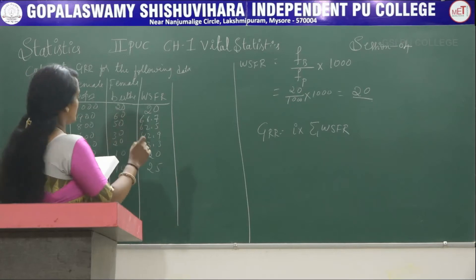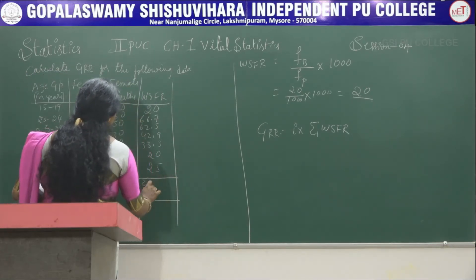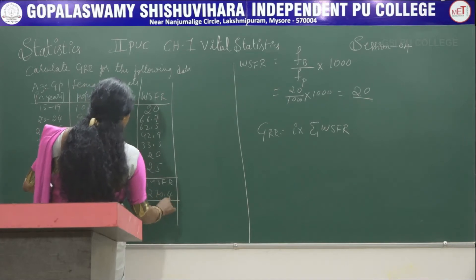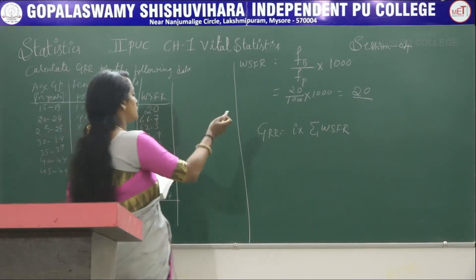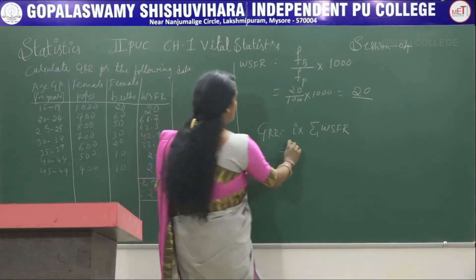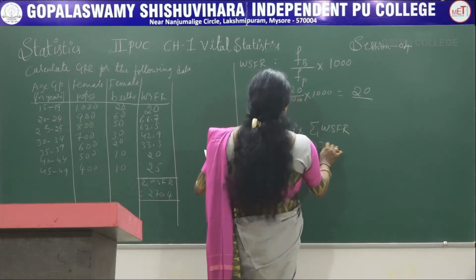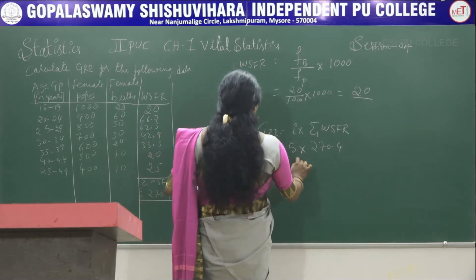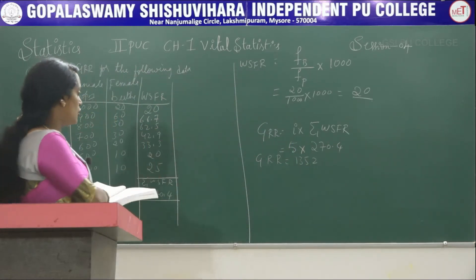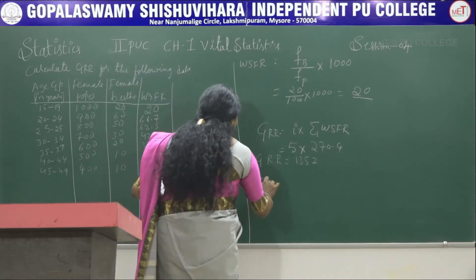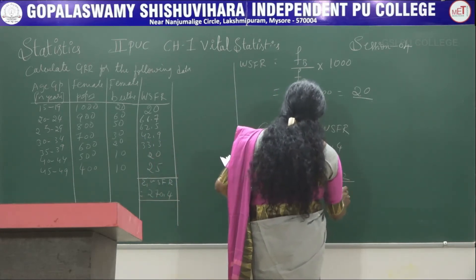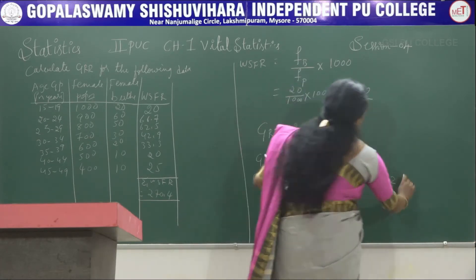To calculate GRR we take the summation of all WSFR values. The summation of WSFR is 270.4. Substituting into the formula — I is the width of the class interval, which is 5 — so GRR = 5 × 270.4. Therefore GRR = 1352 female births per 1000 women of childbearing age. For GRR per woman, it is 1352 ÷ 1000 = 1.352 female births.